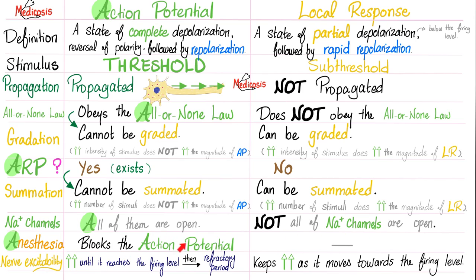Anesthesia will destroy your action potential. The excitability in action potential increases up to the firing level, then hits the refractory period. But in local response, it keeps increasing as you move towards the firing level. So the action potential has four A's: it obeys the all or none law, it has an absolute refractory period, all of your sodium channels are open, and it's blocked by anesthesia. A more detailed explanation is available in my physiology playlist.